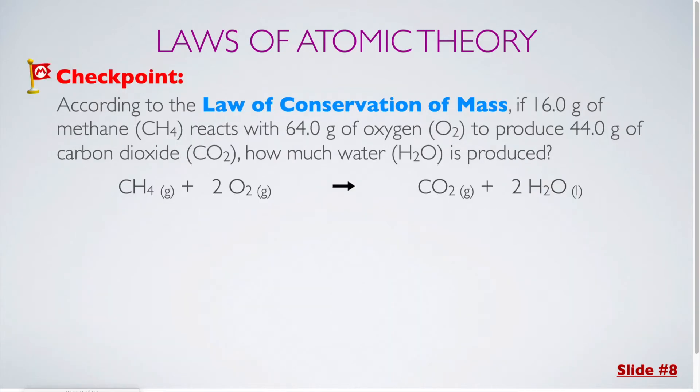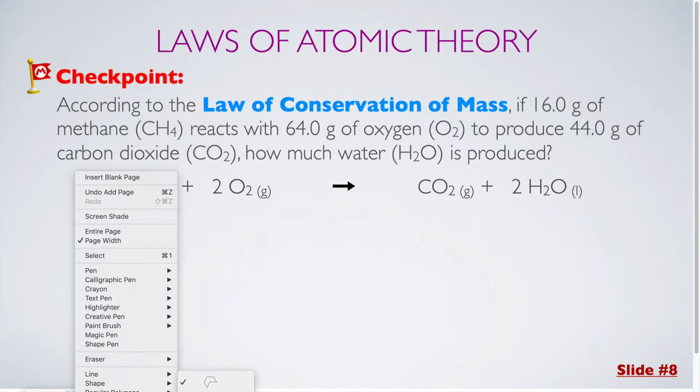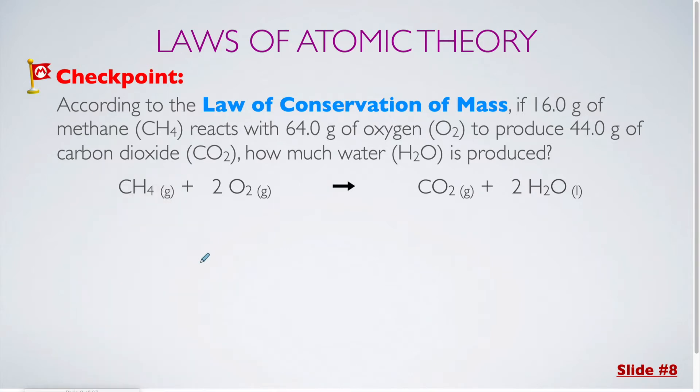For our second checkpoint question, we are going to be using the law of conservation of mass in order to determine the mass of water which is produced from this chemical reaction. Now if you see a problem like this, you should fill in what the masses are for each of your different elements or compounds. So it says that we have 16.0 grams of methane, which is CH4. So we are going to fill in 16.0 grams.